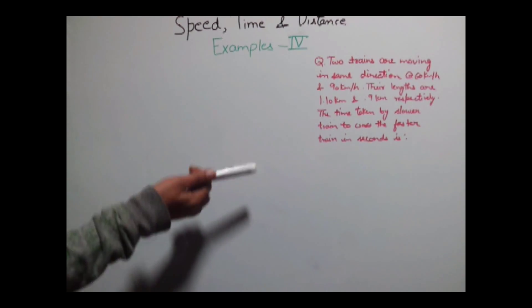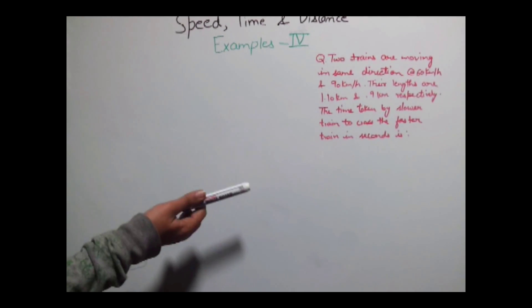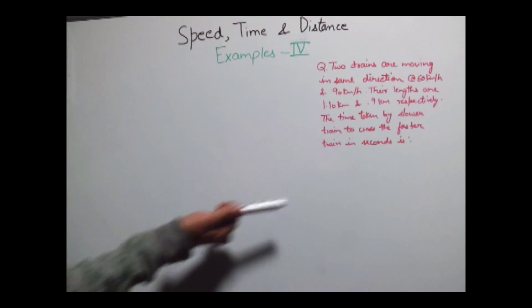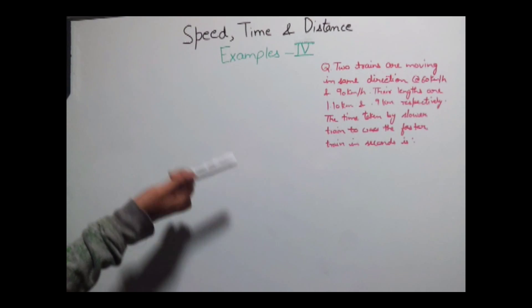Now we need to calculate time in seconds but our speed and distance is given in km per hour and km. So first let's convert them.